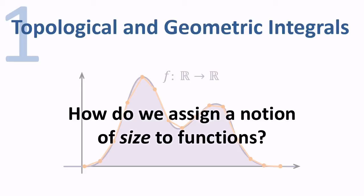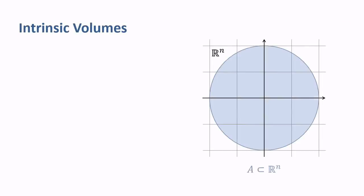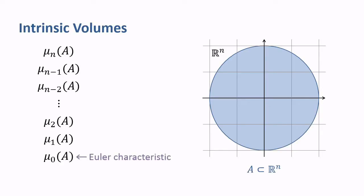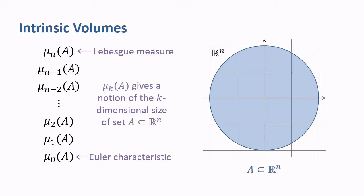I am interested in topological and geometric notions of size, in particular, intrinsic volumes. For n-dimensional sets, there are n plus 1 intrinsic volumes, denoted μ0 through μn, with μ0 the Euler characteristic and μn the Lebesgue measure on n-dimensional Euclidean space. Informally, μk gives a notion of the k-dimensional size for n-dimensional sets.